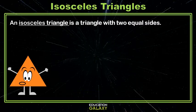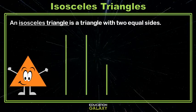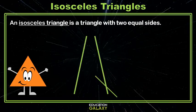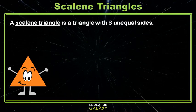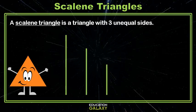An isosceles triangle is a triangle with two equal sides. So two of them are the same size, and then one of them is a different size. And a scalene triangle is a triangle with three unequal sides. That means all three sides are different sizes. Not any two of them are the same length.